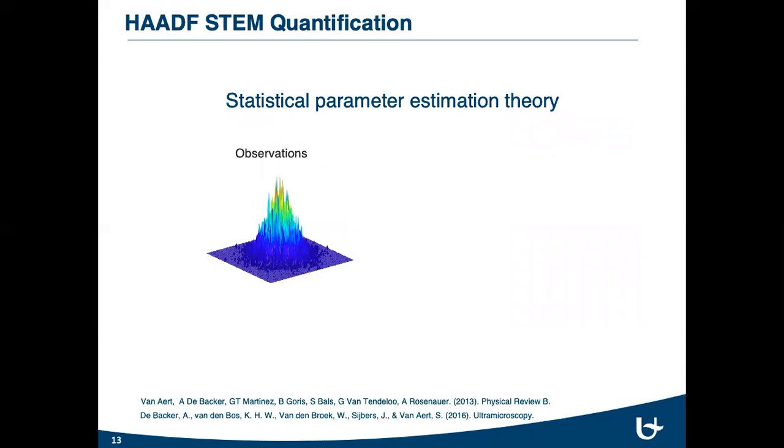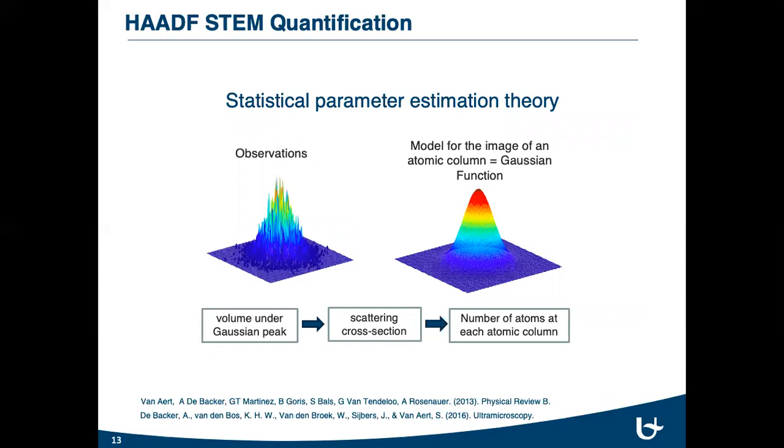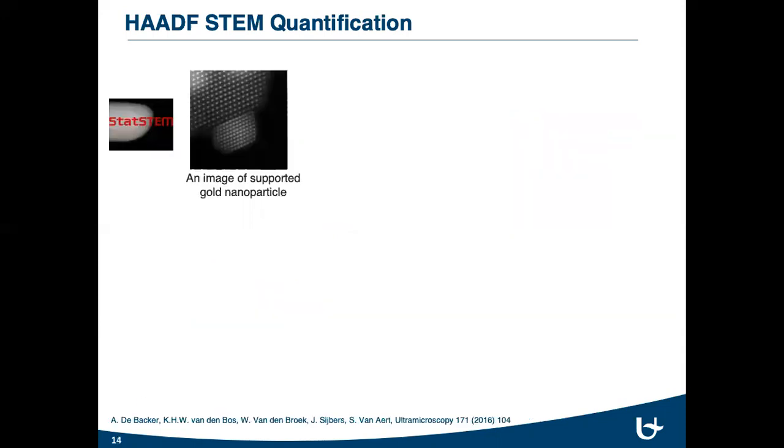After correct post-processing of STM images, the observed peaks in the STM image can be modeled as a superposition of Gaussian functions by using the statistical parameter estimation theory. Then, from the volume under Gaussian peak, the scattering cross-section value is estimated, which gives the total number of atoms at each atomic column.